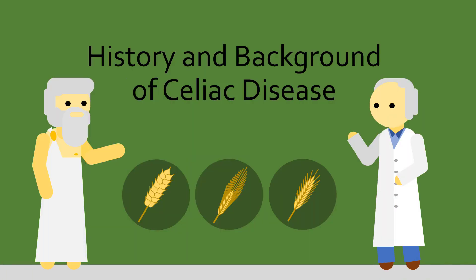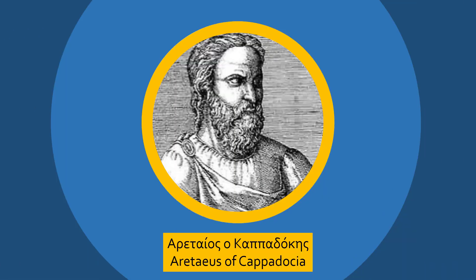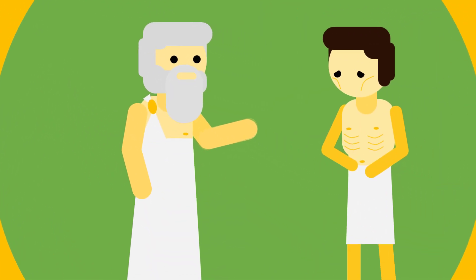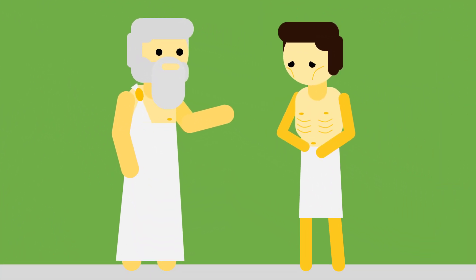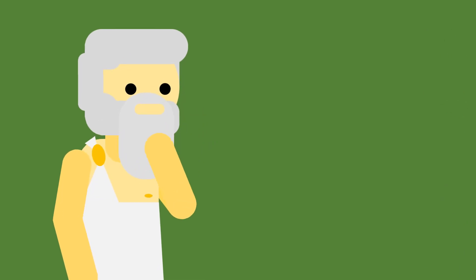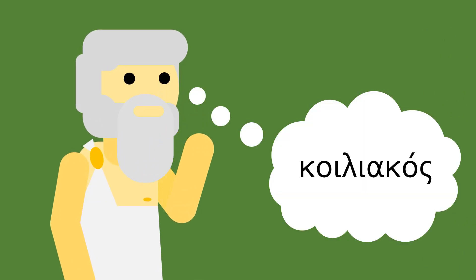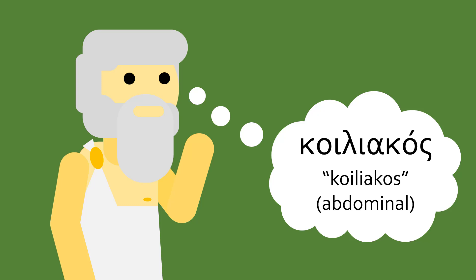Celiac disease symptoms were first recorded 2,000 years ago by the Greek physician Aretaeus, who observed his patients suffering from diarrhea and malnutrition. He named the disease coiliacos, meaning abdominal in Greek, which later became celiac disease when his work was translated.